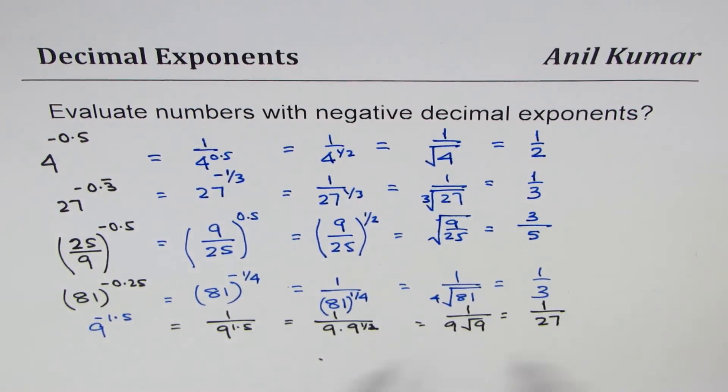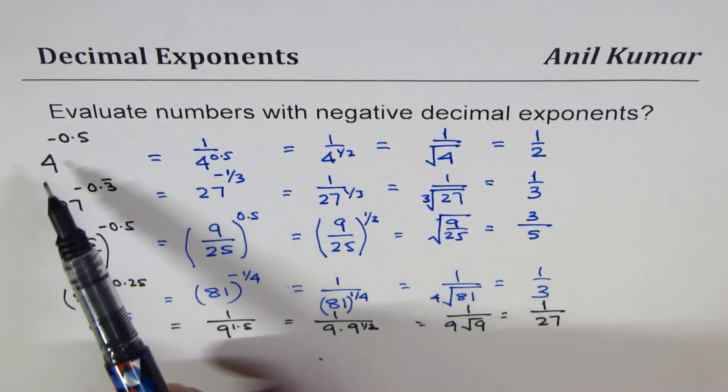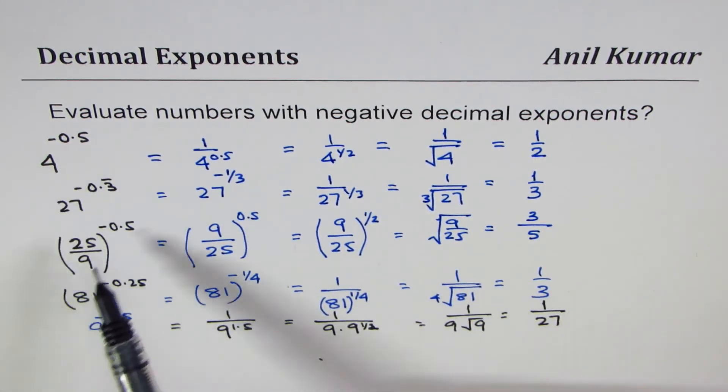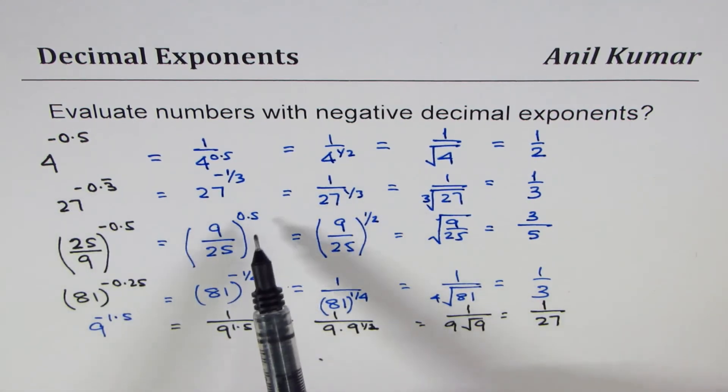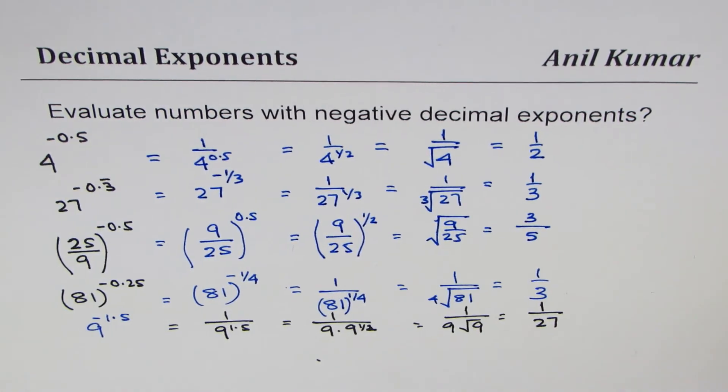So you have seen here that decimal powers when negative will make the function or the number reciprocal, and then you can convert the decimal to fractions or rational numbers to get the radical of the given number.